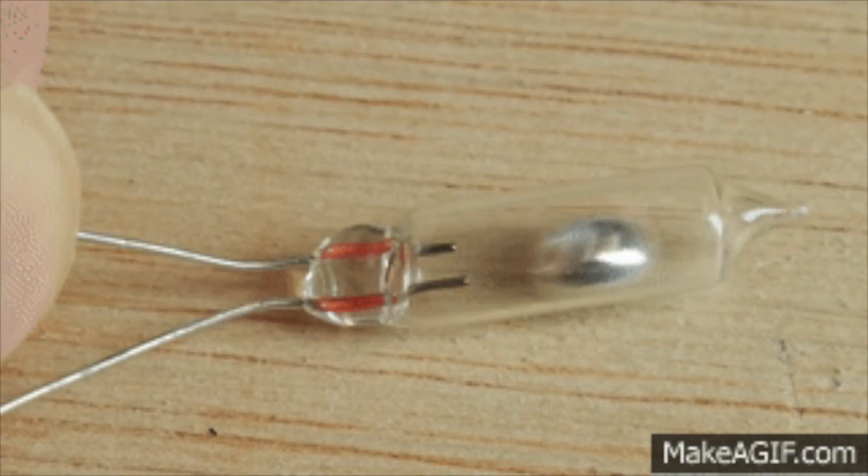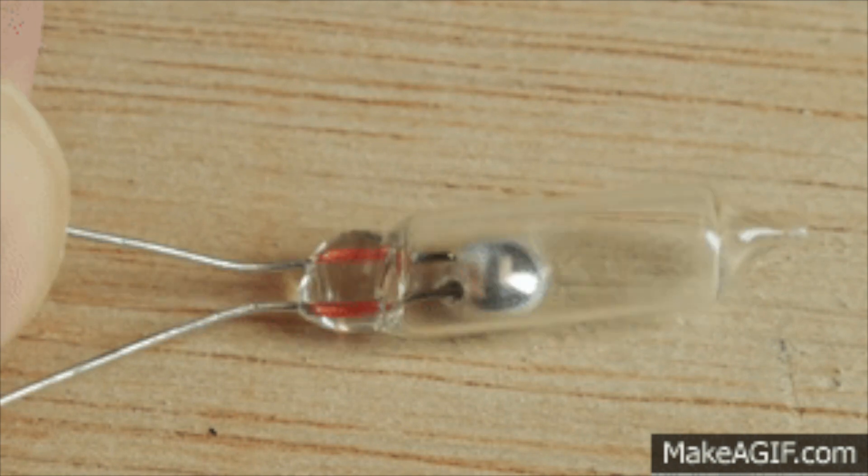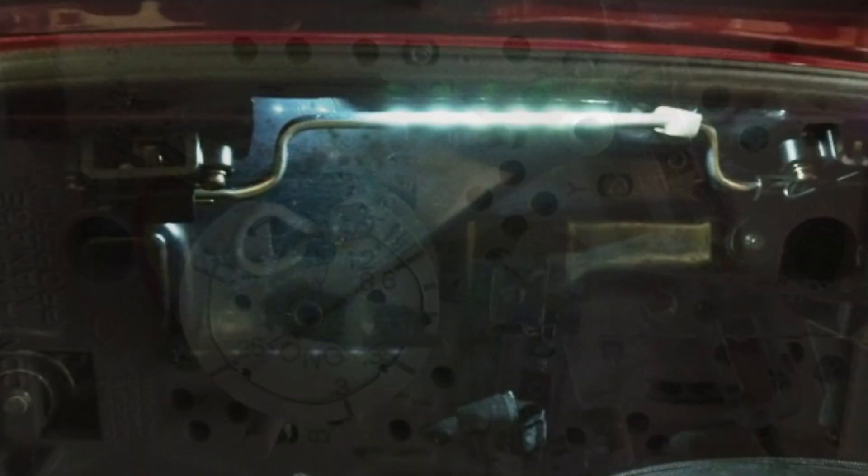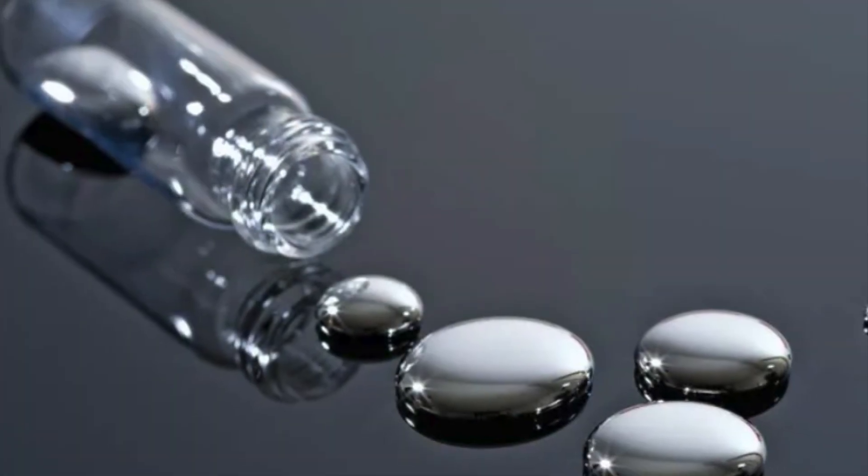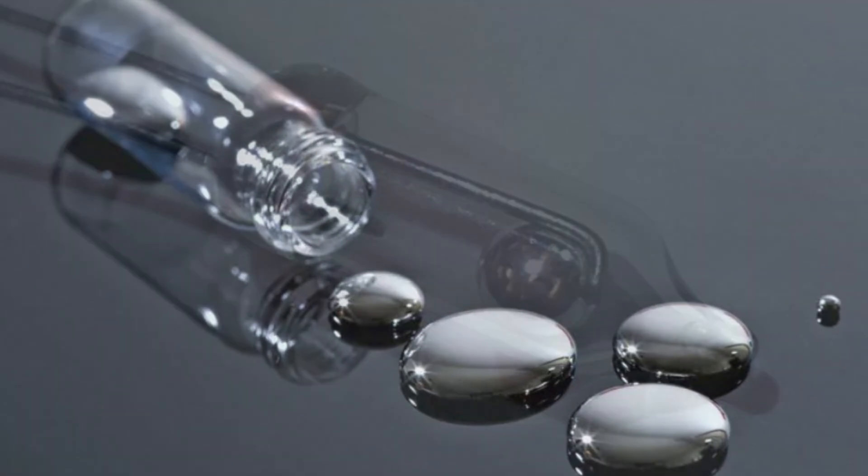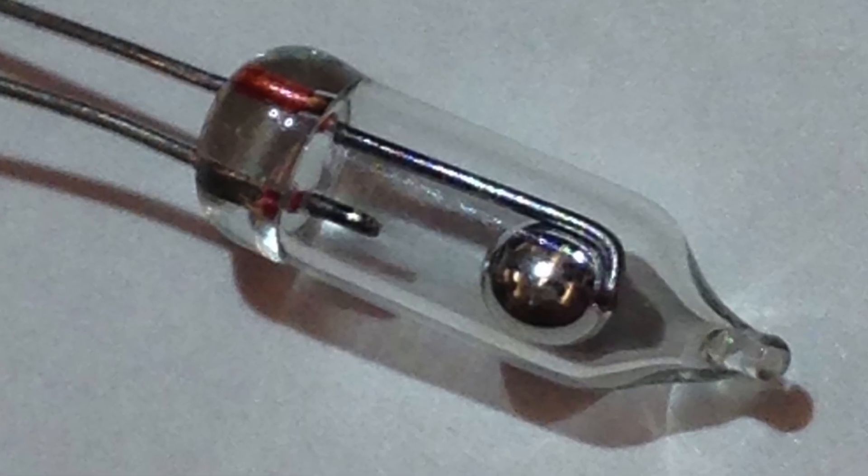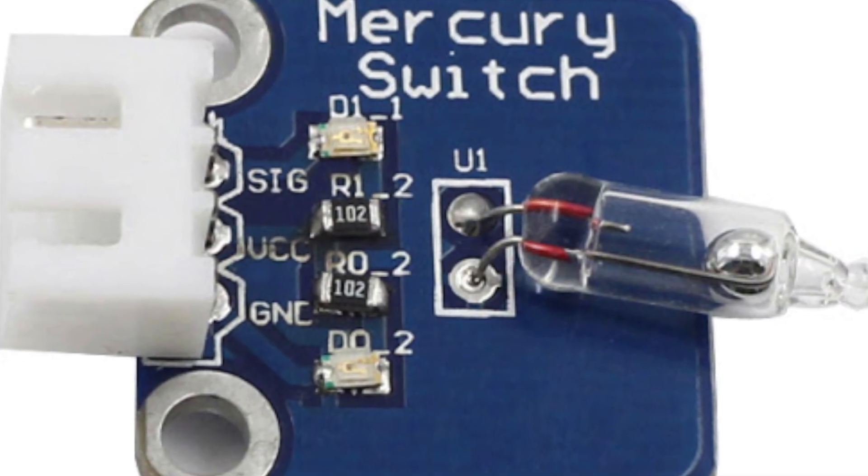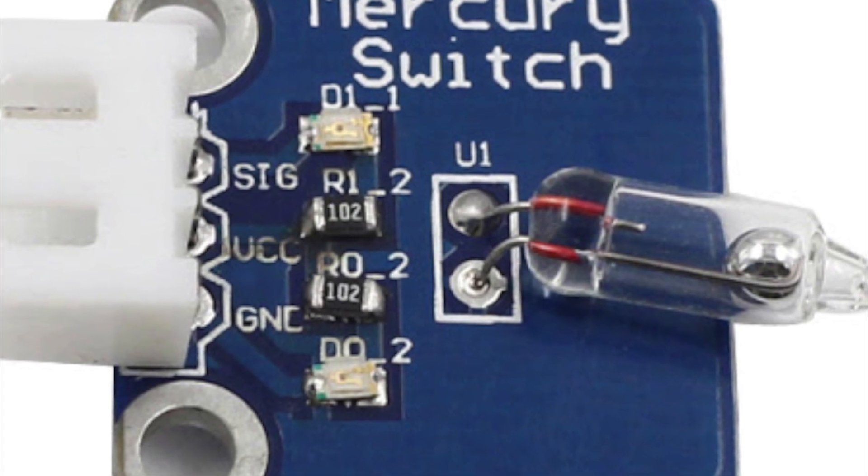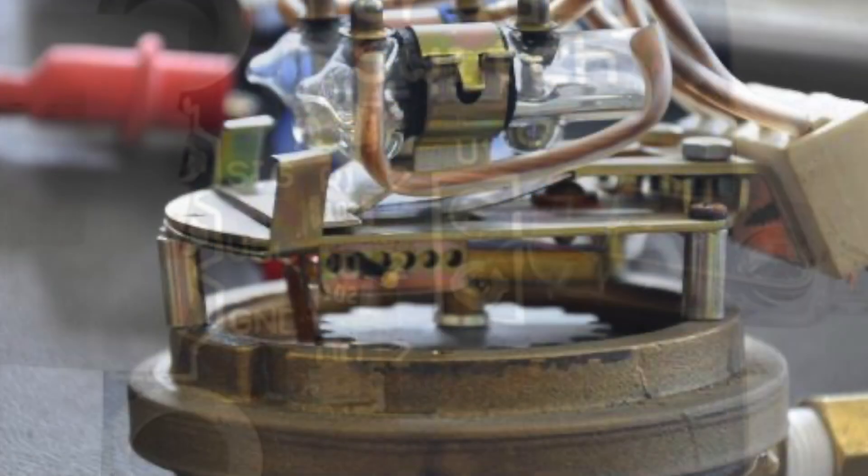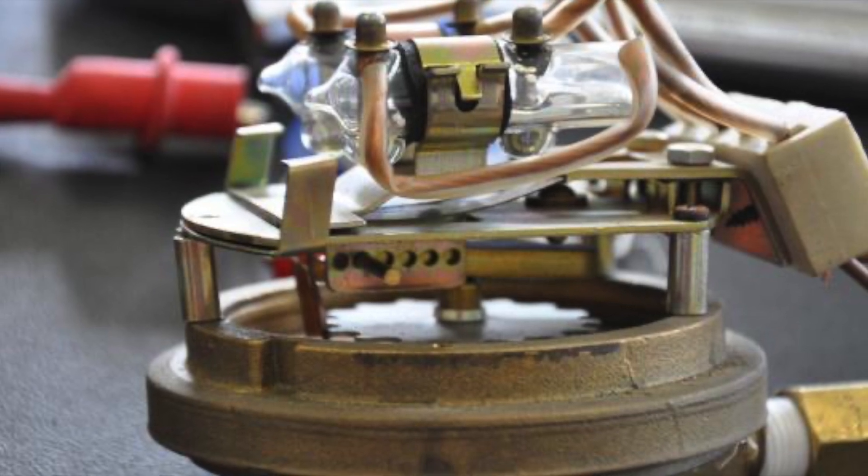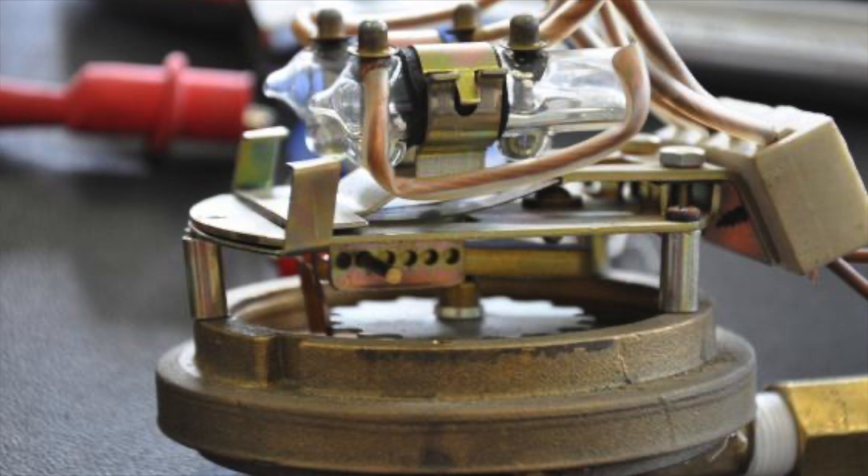So, there you have it. Mercury switches may seem like a small, old-school piece of technology, but they've had a big impact. From helping control the temperature in your house to lighting up your car's trunk, they've been quietly doing their job for years. And while their usage has declined in modern times due to health and safety concerns, they still have a place in certain specialized applications. Next time you think about how switches work, remember this little liquid metal wonder that's played such an important role in our technological history. Thanks for sticking around and learning something new with me. If you have suggestions for our next video, feel free to share them in the comments below. We'll be sure to give you an acknowledgment for your contribution.